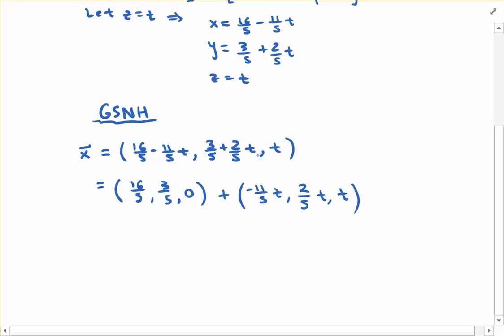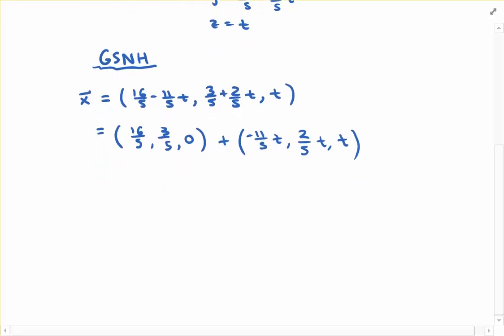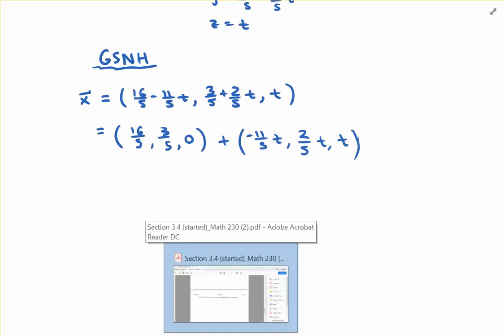It's starting to take the form of the general solution from part B—we're seeing negative 11 fifths t, 2 fifths t, and t—but in part B, the ordered triple we were adding to the general solution was 1, 1, 1. Why are we not seeing that? Well, there's more than one specific solution to the non-homogeneous linear system.